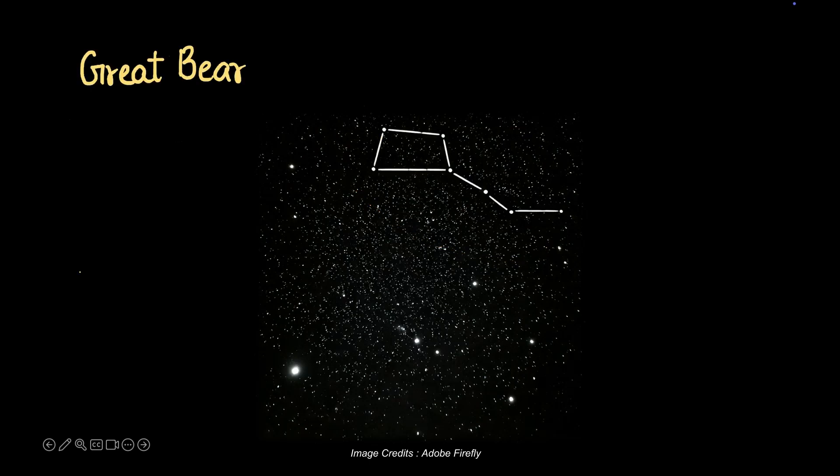Okay, let me join the dots. Now can you see something? This pattern is called the Great Bear. Obviously the lines between the stars are just imaginary, but this pattern is called the Great Bear.